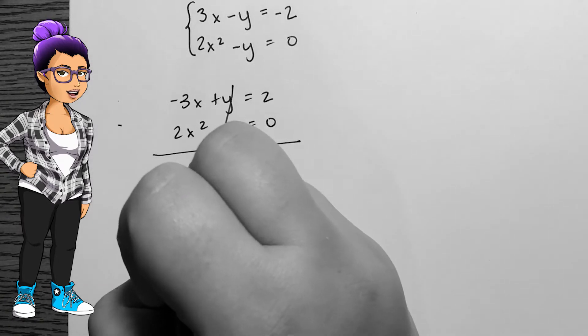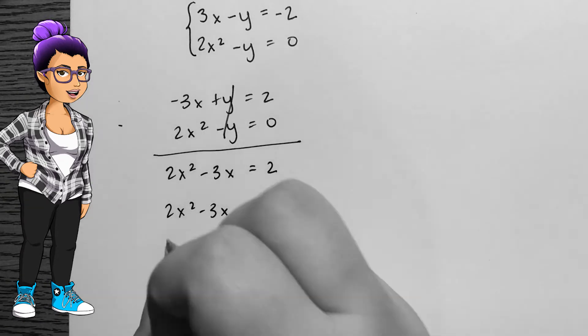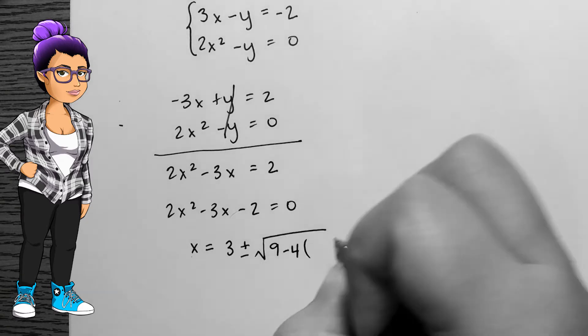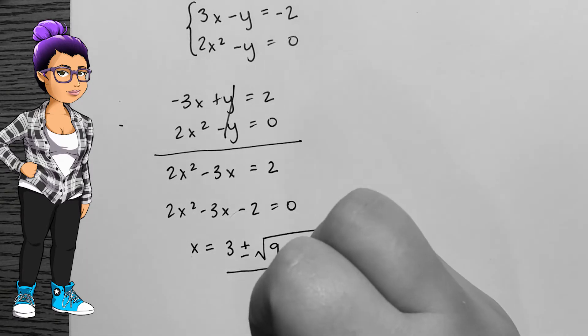Now when I add like terms, the x squared term is all alone and remains. Same for the x term. The y term is eliminated and the constant becomes 2. My equation is 2x squared minus 3x equals 2.